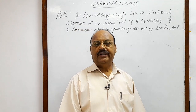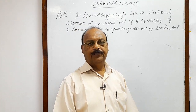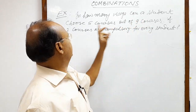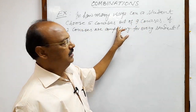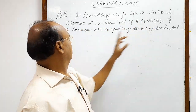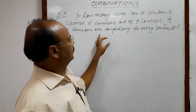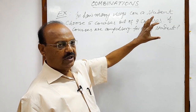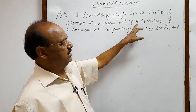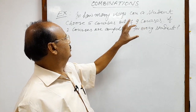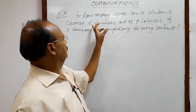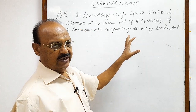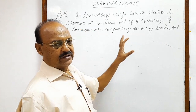Here you will see a question from the topic combinations. The question is: in how many ways can a student choose five courses out of nine courses if two courses are compulsory for every student? So total number of courses is nine, a student has to take five courses, and two courses are compulsory.